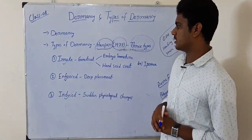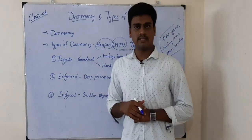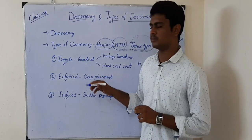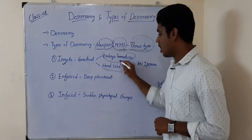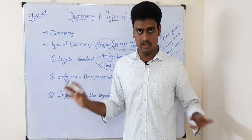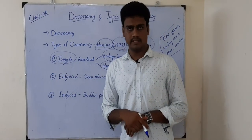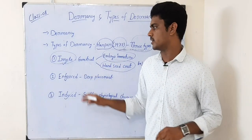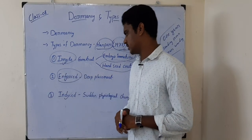The three types of dormancy are: first, innate dormancy; second, enforced dormancy; and third, induced dormancy. Innate dormancy means dormancy due to genetical changes in the seed. Because of immaturity of the embryo or due to a hard seed coat, the seed will not germinate — that we call innate dormancy.